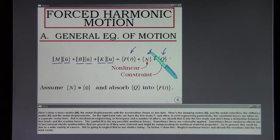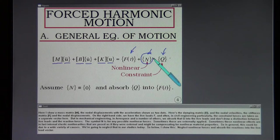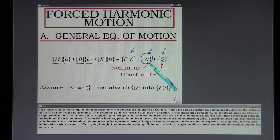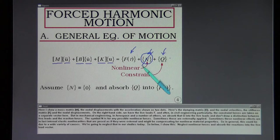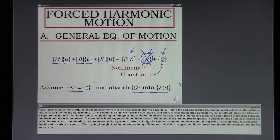The symbol N is for any possible non-linear forces. Sometimes those are externally applied. Sometimes these non-linear effects are in fact internal elastic non-linearities that are posed as if they were external and might be compensating for non-linear material properties. So in general this could be due to a wide variety of causes. We're going to neglect that in our studies today. So below I show this: neglect the non-linear forces, absorb the reactions into the live load vector.